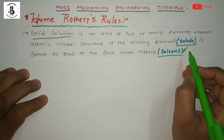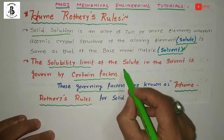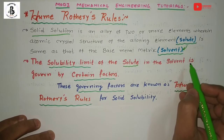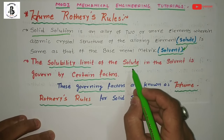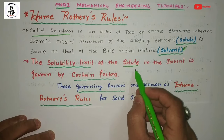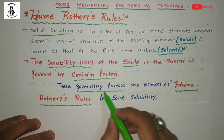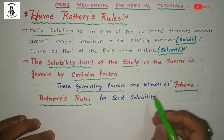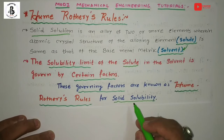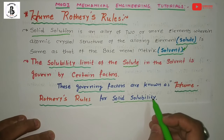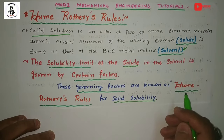Generally, this depends upon two characteristics. The solubility limit of the solute into the solvent is governed by certain factors — how the solute atoms will take positions into the solvent structure. These governing factors are known as Hume-Rothery rules for solid solubility. These rules are also used for understanding different phase diagrams with different solubility systems, or binary systems.